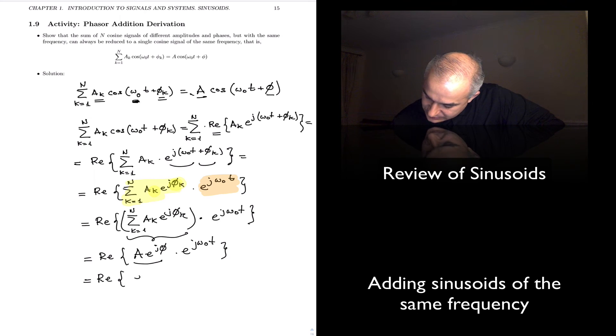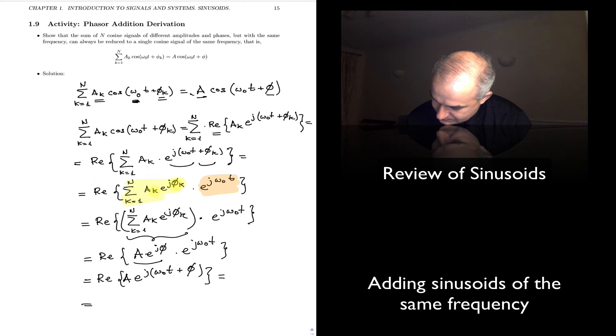So, this is equal to e to the j omega zero t, I'm going to put it back now, amplitude, plus a theta, which is equal to A times cosine of omega zero t plus theta, which is the result that we wanted.